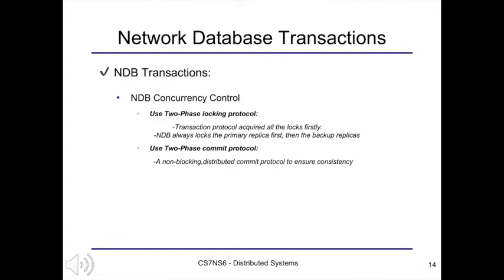For concurrency control, NDB uses the strict two-phase locking protocol. The transaction protocol starts by acquiring all necessary locks and does not release those locks until the transaction commit point is reached. NDB always locks the primary replica first, then the backup replica to avoid deadlocks. NDB also implements a non-blocking distributed commit protocol that uses the two-phase commit protocol across rows while using a linear two-phase commit protocol for each row.